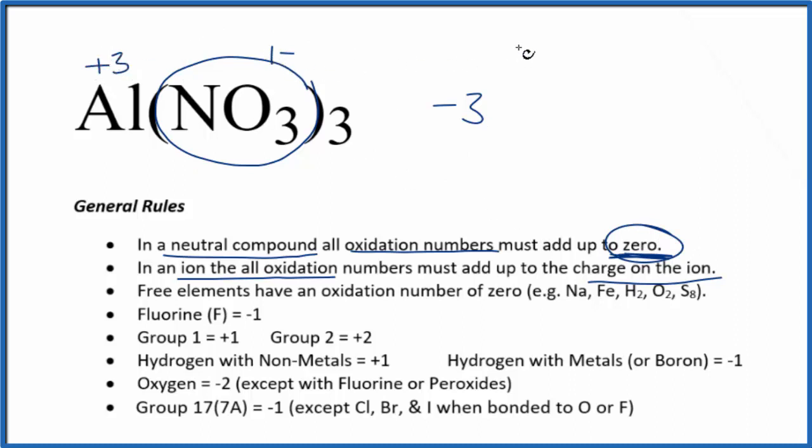If you need help finding the oxidation number on the nitrogen here in the nitrate ion, there's a link in the description to help you do that. This is Dr. B with the oxidation numbers for Al(NO3)3, aluminum nitrate. Thanks for watching.